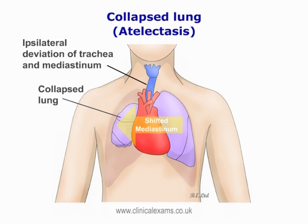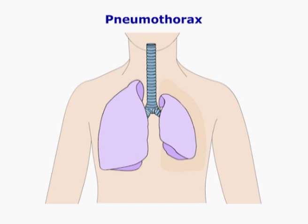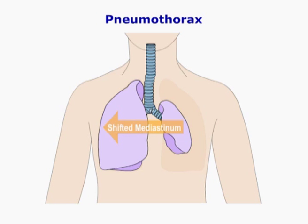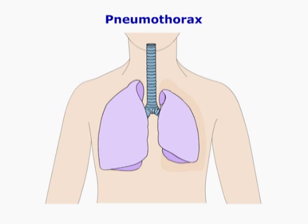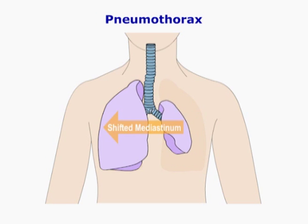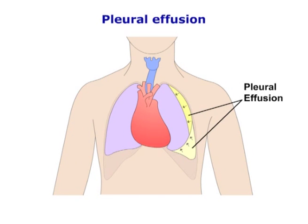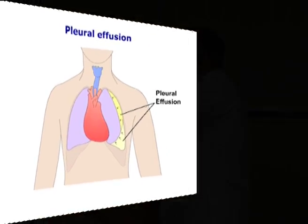Collapse pulls the mediastinum towards the lesion. Pneumothorax pushes the mediastinal contents away from the lesion. Likewise, a large effusion also displaces the mediastinum.